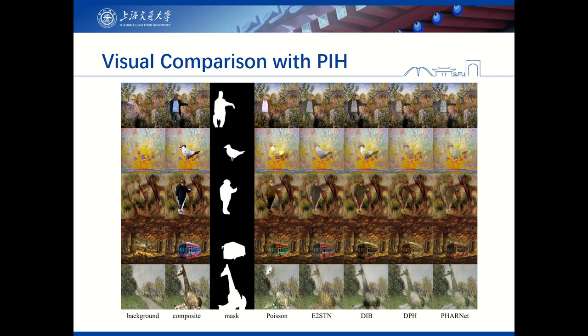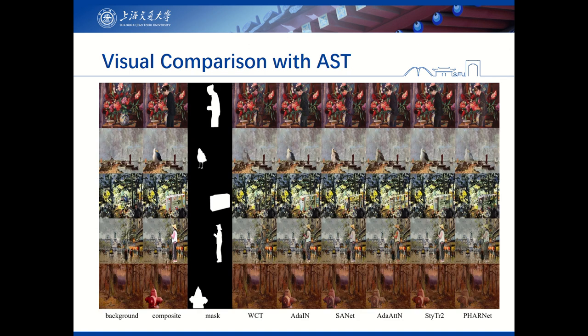Interestingly, without sacrificing the stylization effect, our method can also maintain the color distribution of the foreground, while other methods either under-stylize the foreground or lose partial color distribution information. Since style transfer methods do not focus on stylizing the foreground region, the foreground may not be adequately stylized and the content structure may be destroyed. Additionally, since style transfer methods do not consider the location of the foreground in the composite image, the stylized foreground may be incompatible with the surrounding background. In contrast, our method is able to transfer the style and retain the content structure, leading to more visually appealing results. The stylized foregrounds are harmonious with backgrounds, as if they originally existed in the paintings.